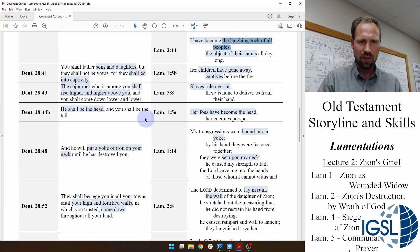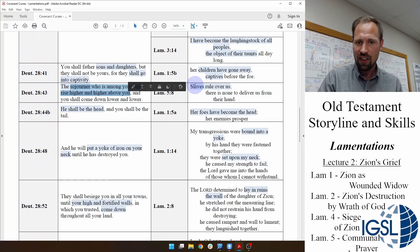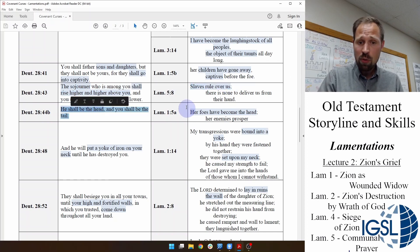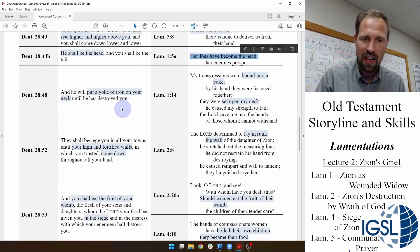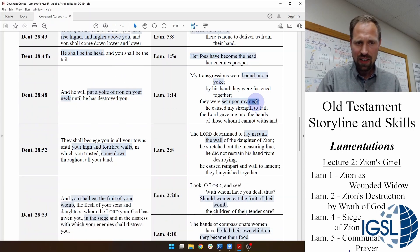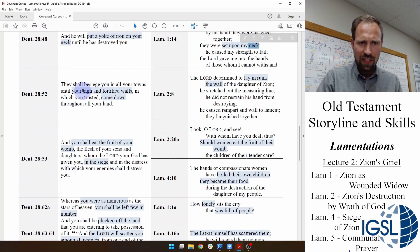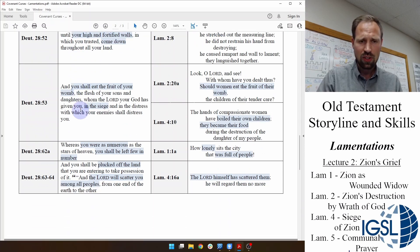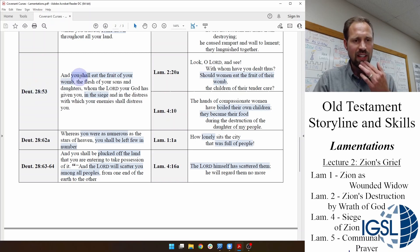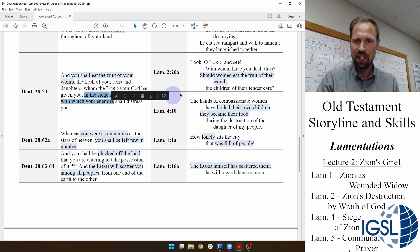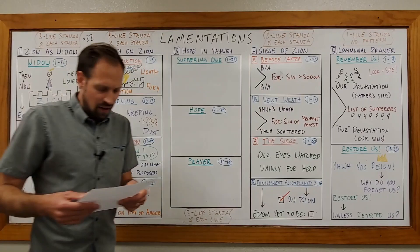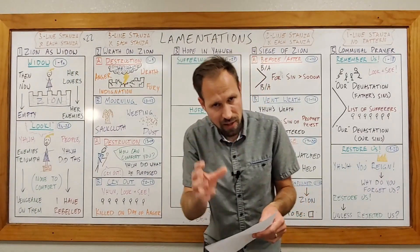In Lamentations chapter 3, your sons and daughters will go into captivity. The sojourner will be higher than you. He will be the head, you will be the tail. Her foes have become the head. There will be a yoke on your neck. They will tear down your walls. And this is so bad. Deuteronomy 28:53, And you shall eat the fruit of your womb in the siege because of your hunger. The Lord will scatter you among the peoples. Yahweh is faithful to his word. And as Lady Zion said, the Lord is in the right for I have rebelled against his word.